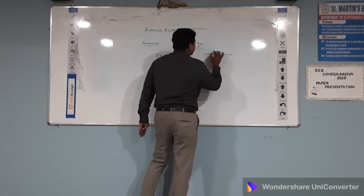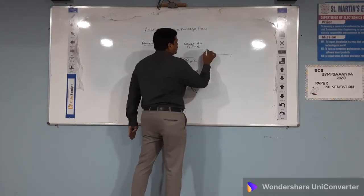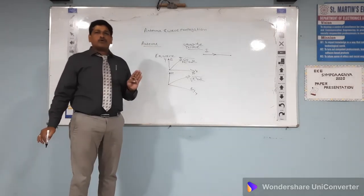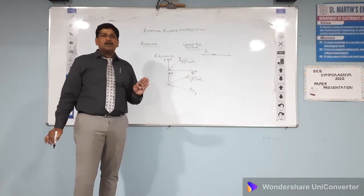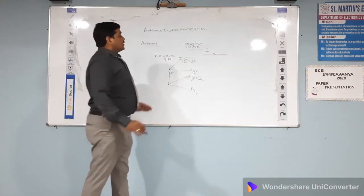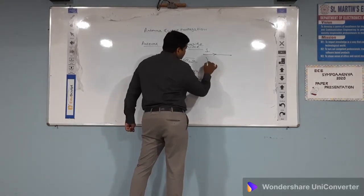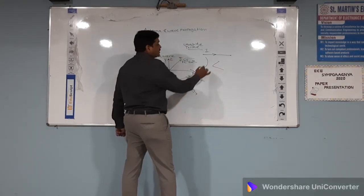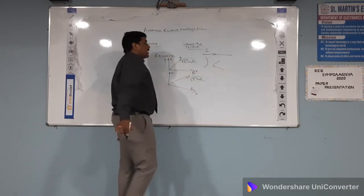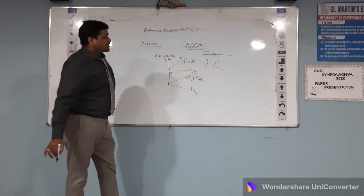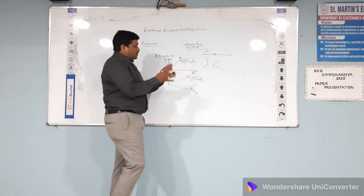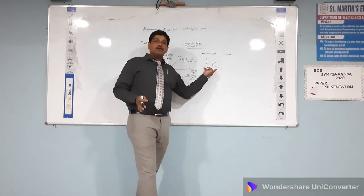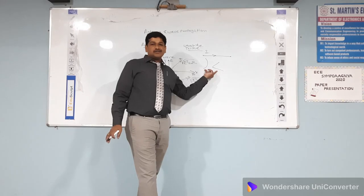If you consider a straight line and the current is uniform along this straight line, then electromagnetic waves cannot propagate — because of this uniformity it cannot propagate. But if it is a curved path or a bent path, electromagnetic waves can propagate because of that non-uniformity of the structure, even though the current is uniform.